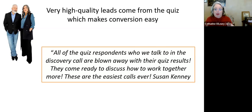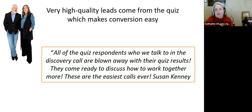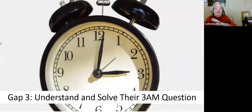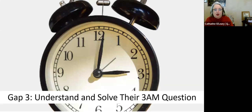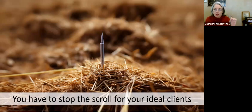You really want to make sure that when you're bridging these communication gaps, you're taking them through the solution, building your authority, and getting them to that point where 'you're my people and I'm your people.' This is probably the biggest fundamental gap for most entrepreneurs: understanding the 3am question. In order to stop the scroll, you've got to stop people in their tracks — and the best way to do that is with a problem they're already talking about or waking up at 3am thinking about.